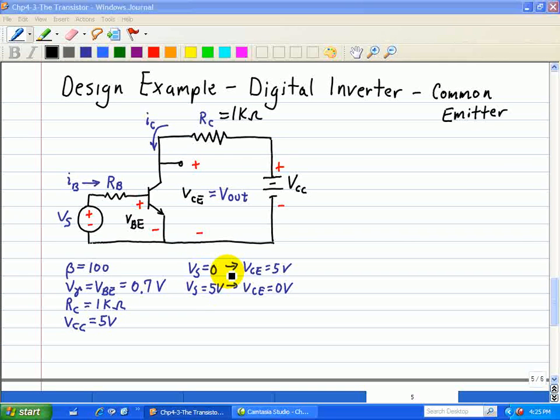So for Vs equal to zero, the transistor will be in cutoff mode regardless of the value of the resistor RB, since the input is less than the threshold voltage V gamma of 0.7 volts.